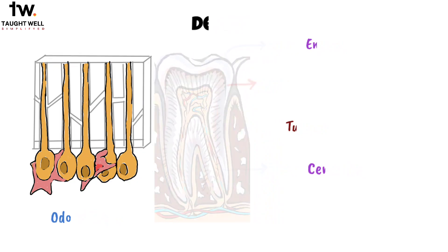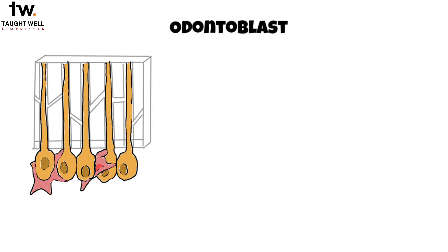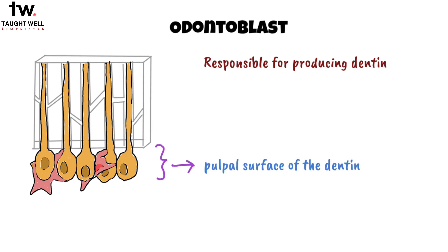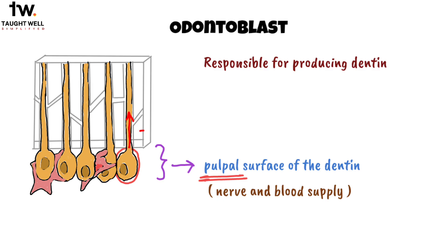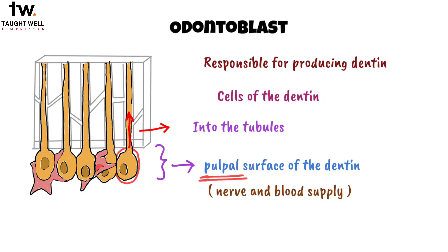Odontoblasts are the cells responsible for producing dentin. These cells have their main bodies lined up along the pulpal surface of the dentin, which is the inner part of the tooth where the nerve and blood supply are found. However, even though the cell bodies of odontoblasts are located in the pulp, they extend long processes into the tubules within the dentin. This is why odontoblasts are considered cells of the dentin — they are actively involved in its formation and maintenance.